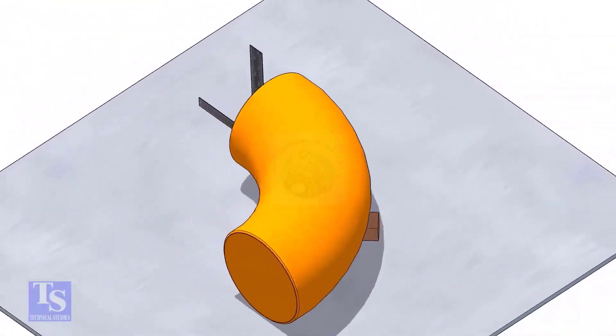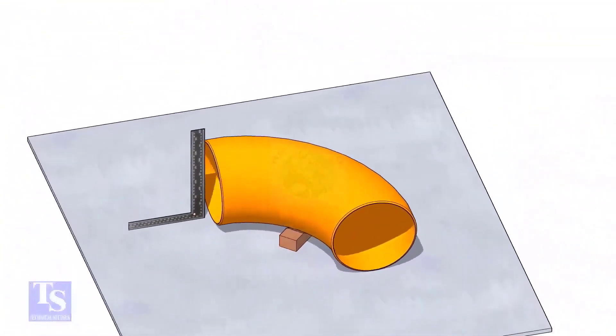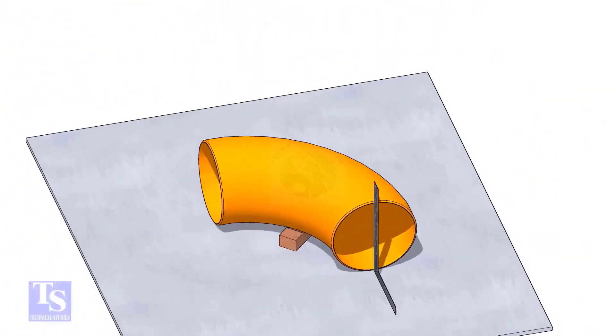Check the squareness of the face of the elbow with the plate. If necessary, put some packing below as shown.